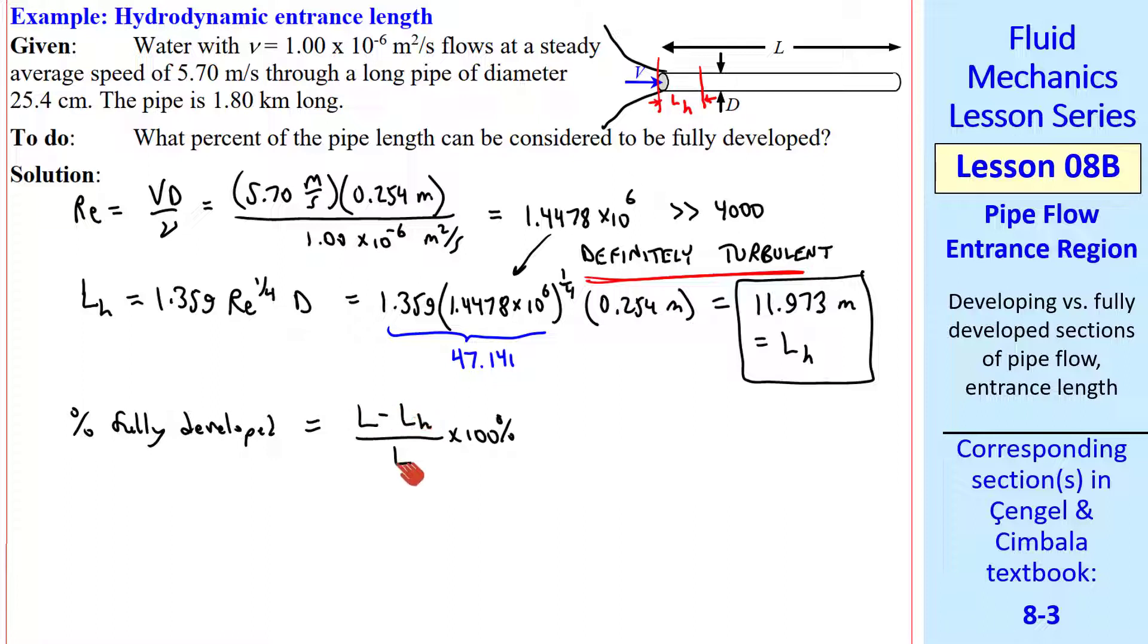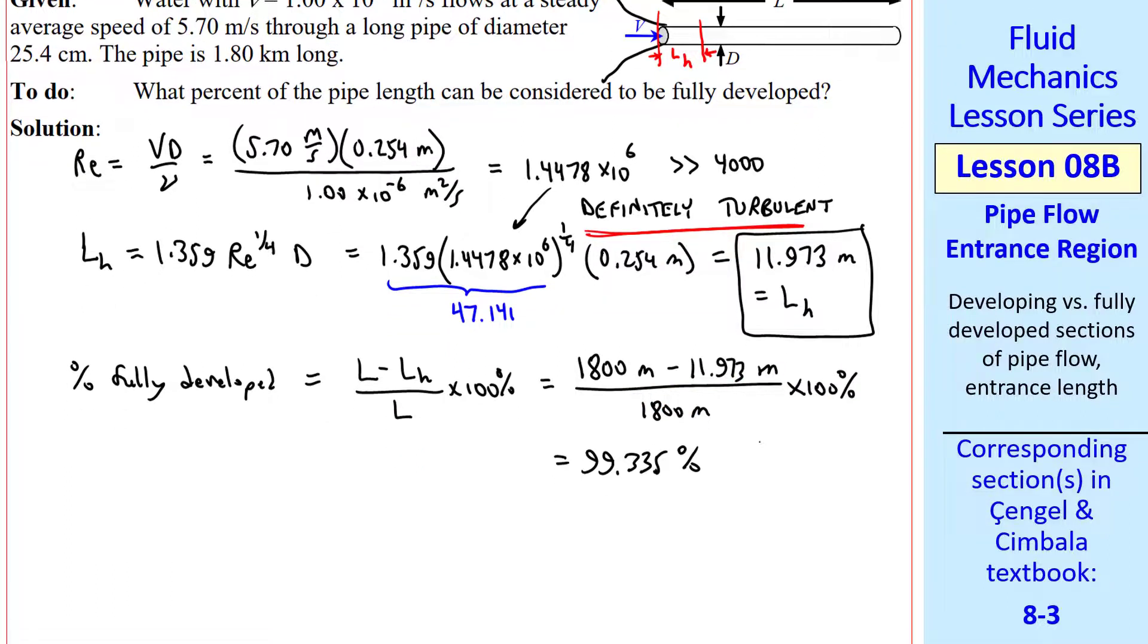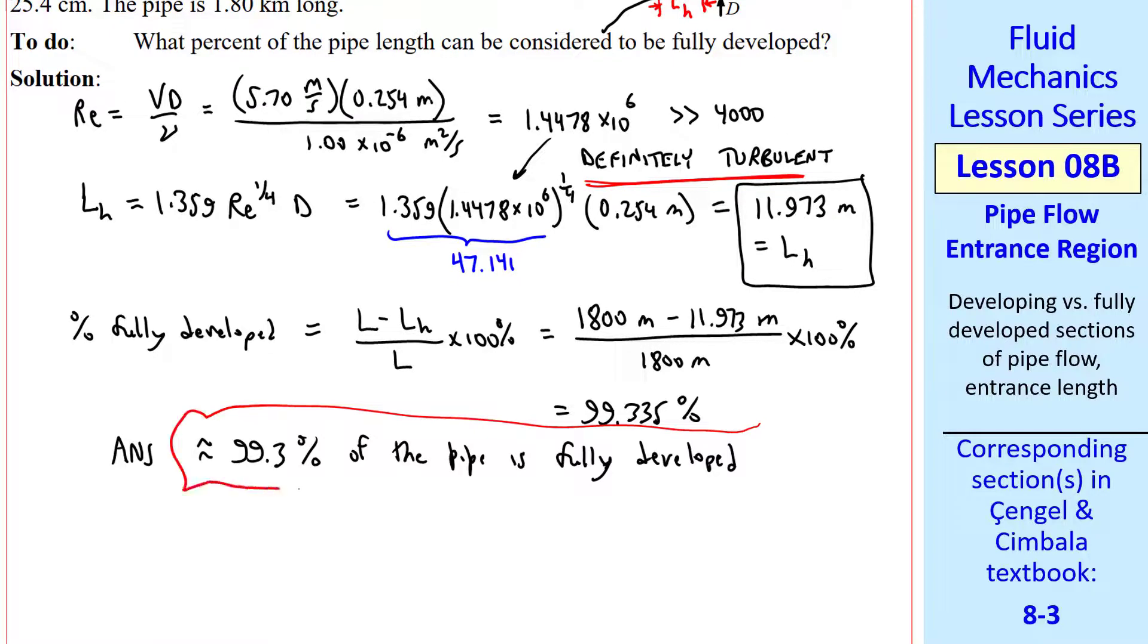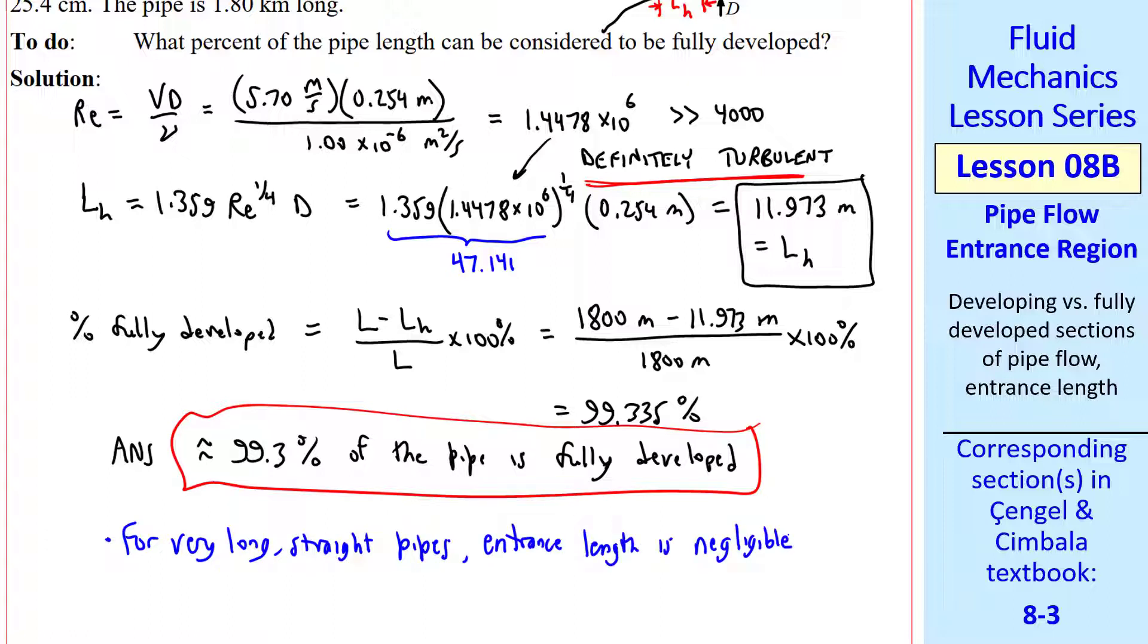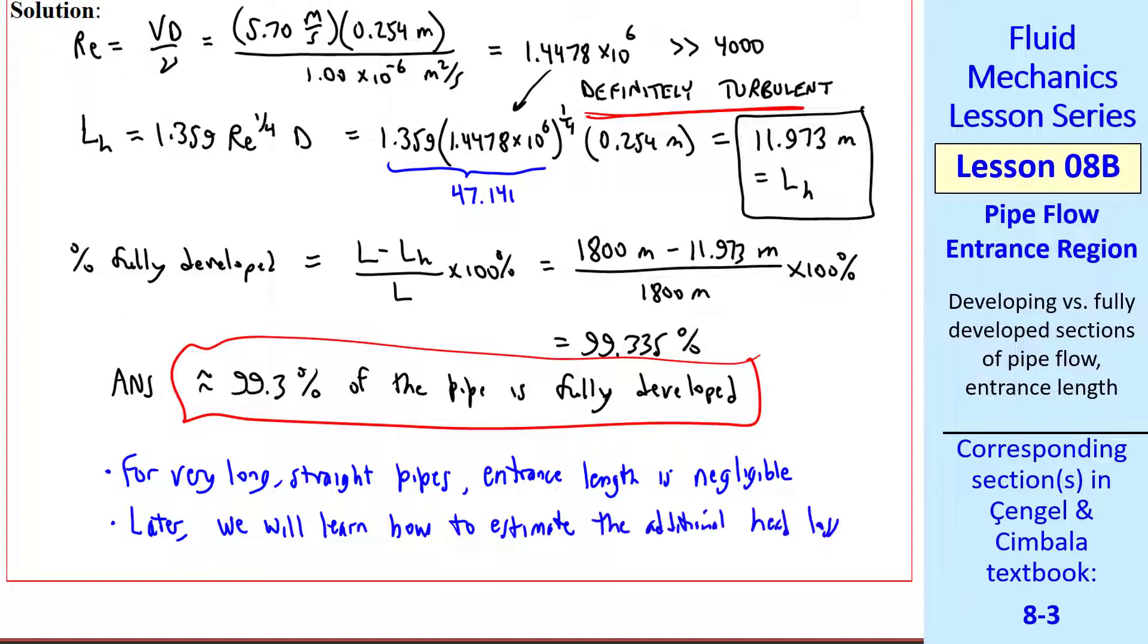Plugging in our numbers and having consistent units, we get 99.335%. So our answer is that 99.3% of this pipe is fully developed. You can see that for very long straight pipes, such as a water pipe like this, entrance length is negligible or insignificant. In a later lesson, we'll learn how to estimate the additional head loss due to these entrance effects. And in our analyses, we'll always include these extra losses, even in cases where the entrance effects are small.